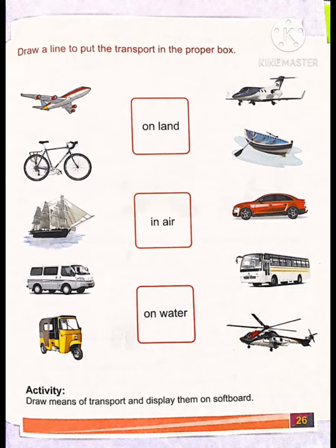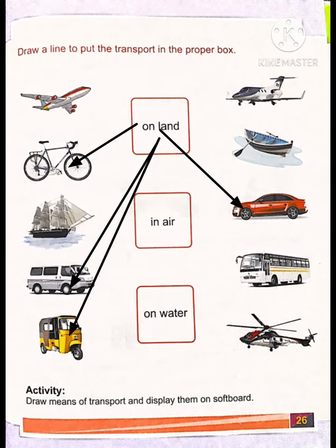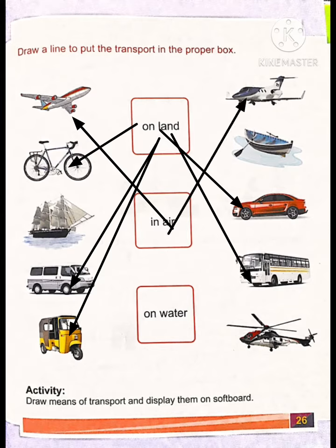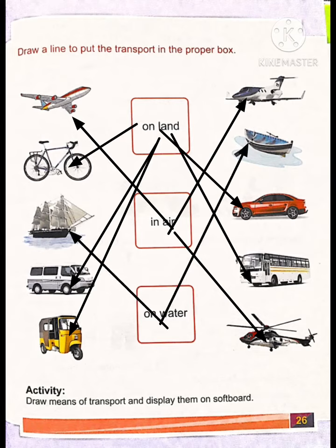Draw a line to put the transport in the proper box. Now, dear students, tell me which transport is used on land. First is cycle — match with cycle, van, auto rickshaw, car, and bus. Next, in air: aeroplane, flying jet, and helicopter. Last, on water: ship and boat.